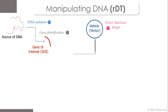Once vector selection or design is done, the next step is to mix the gene of interest and the vector DNA in specific stoichiometric quantities. Before or after mixing, we perform restriction digestion using restriction enzymes. In order to join two pieces of DNA, their ends must be made compatible — restriction digestion achieves this by cutting the vector DNA with the same restriction enzyme used on the gene of interest.